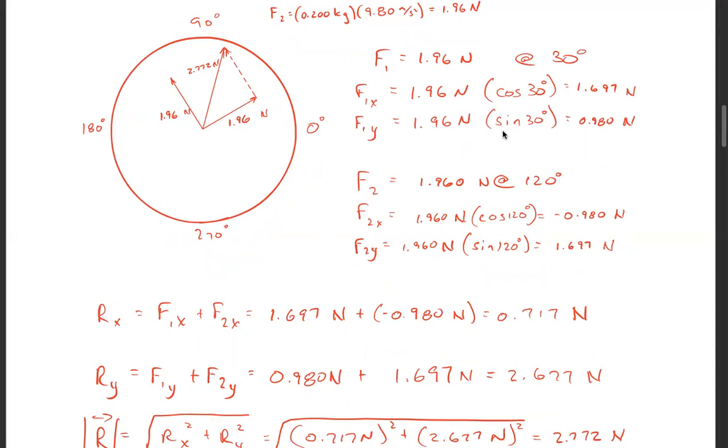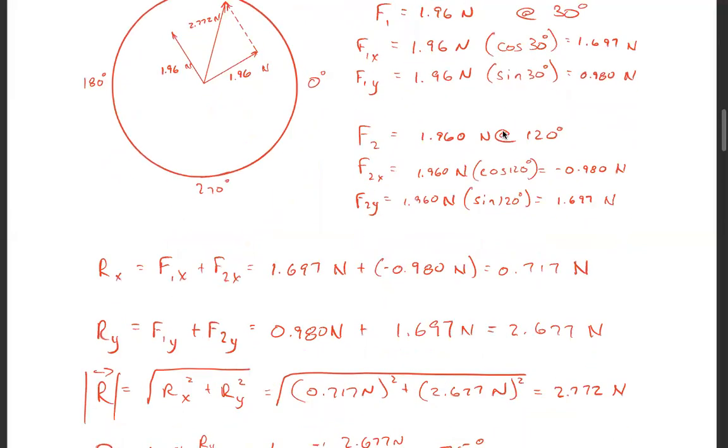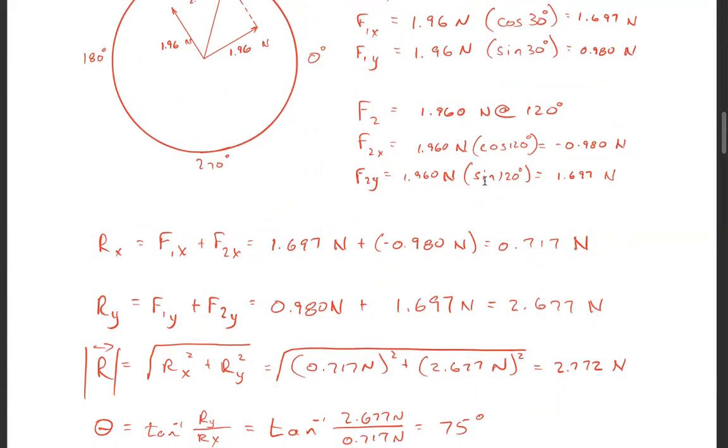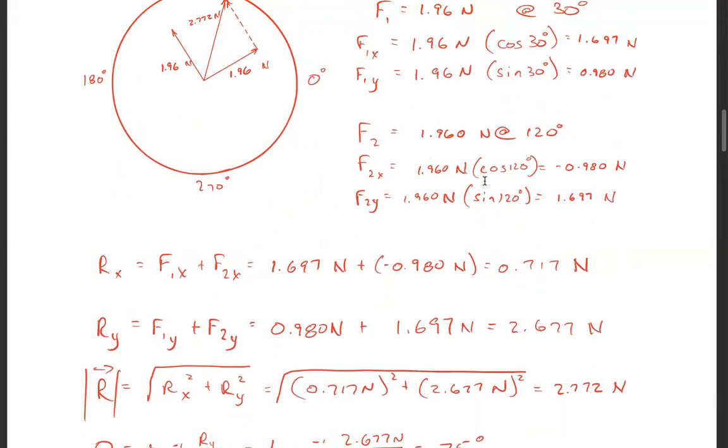F2, I got minus 0.98 Newtons for the x. You can see it's a small vector over here. And for the y it's 1.697 Newtons.